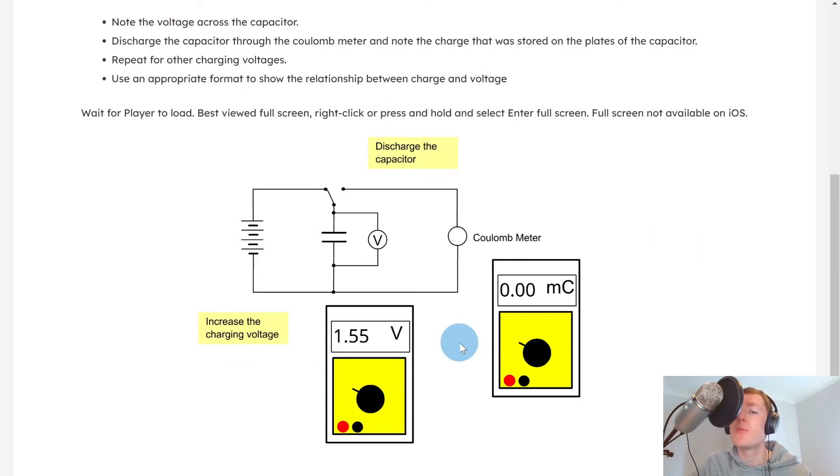So let's say we have a table of potential difference in volts and charge in millicoulombs. Then we would initially write down our first voltage, 1.55 volts, and then discharge the capacitor through the coulomb meter, and you'll see our first value is 7.6 millicoulombs.